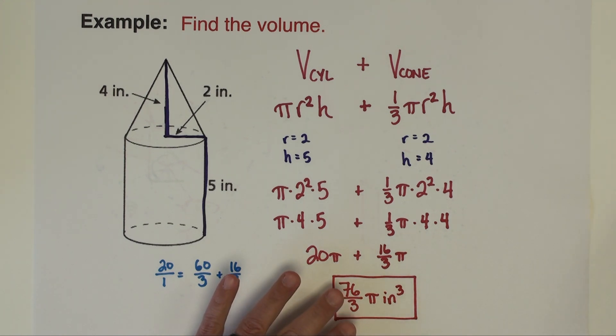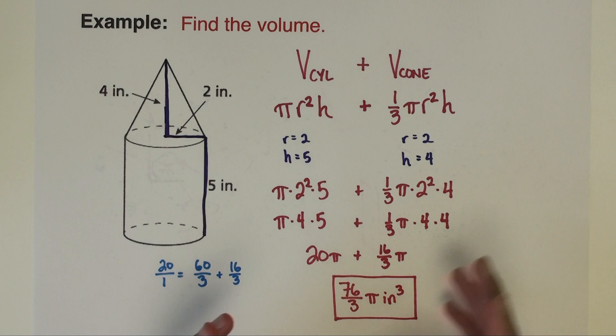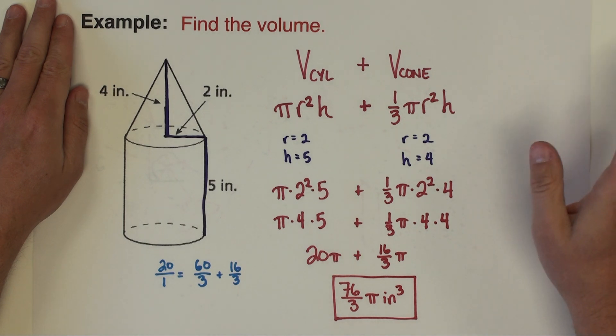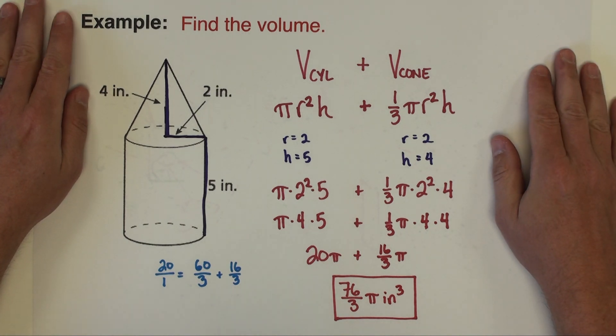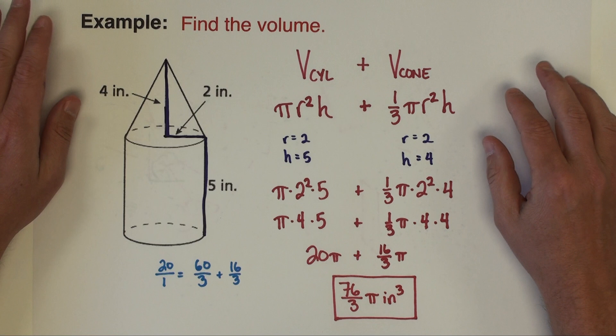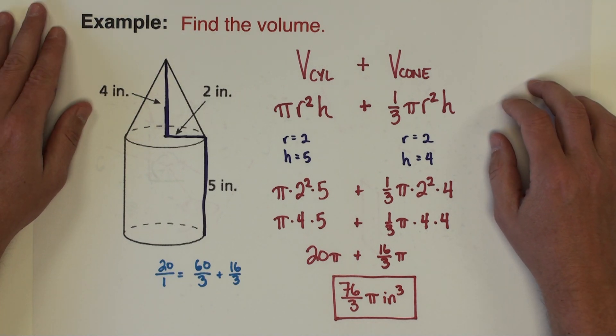That is the answer in exact form. I'll leave it to you if you want to convert that to a decimal. We've done that plenty, so if you need to do that you should know how to do that by now if you've been following this video series so far. So that concludes this video on finding volumes of pyramids and cones. If you have any questions or want to leave a comment please do so below. If you found the video helpful give this a thumbs up and I'll see you in the next one.